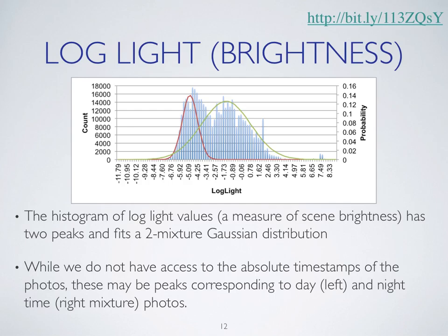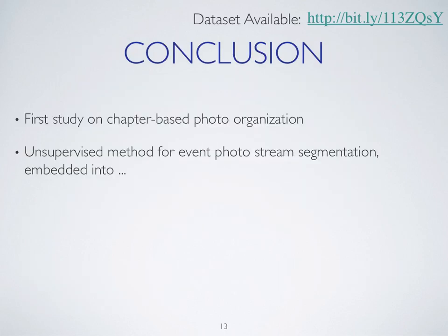When we look at log brightness of the photographs, we can see that the distribution fits a two-mixture Gaussian distribution better than a single distribution. While we don't have access to the absolute timestamps because we only have time gaps between subsequent photos, we believe these peaks may correspond to daytime and nighttime photography. There are other statistics we could examine, but for the sake of time we will conclude here.